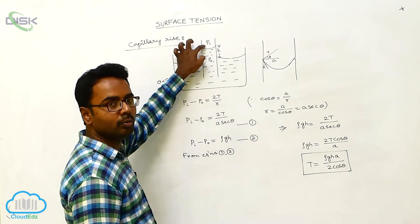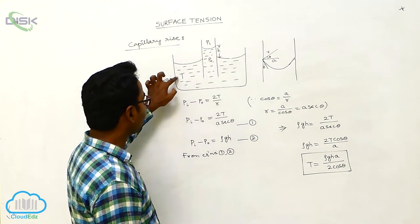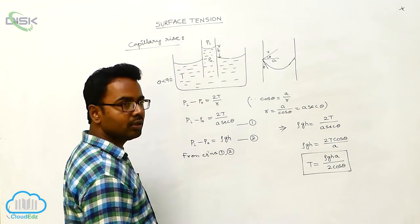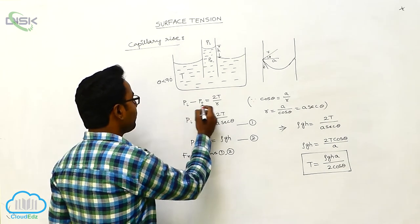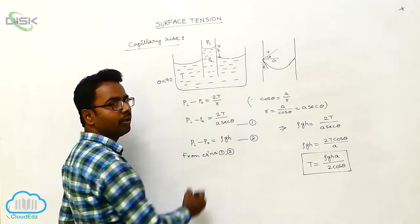It is like an air bubble inside the water, inside the liquid. For the liquid, surface tension is T and the radius is R, so we write Pi minus P0 is equal to 2T by R. R is the radius of this air bubble.